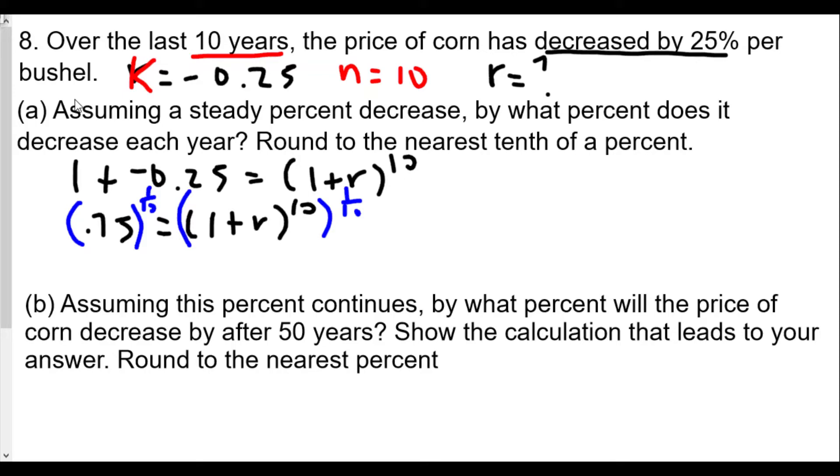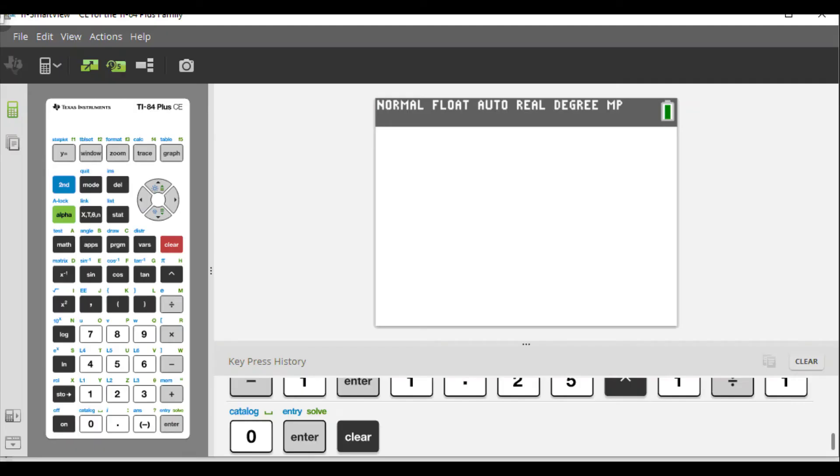Now with a graphing calculator, we're going to find the value of 0.75 raised to the one tenth. So we take 0.75 and raise this to 1 over 10.